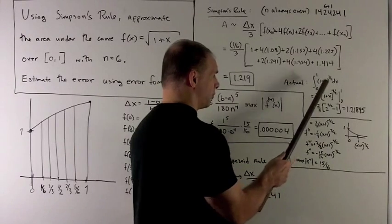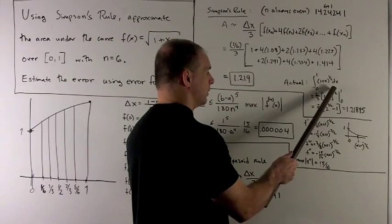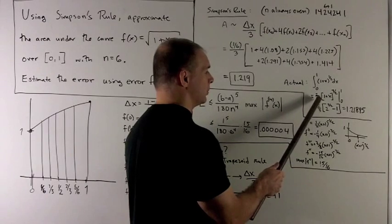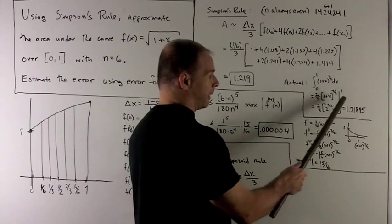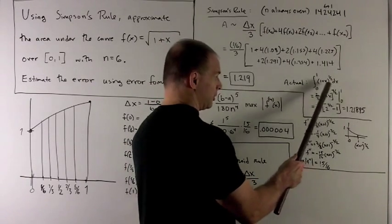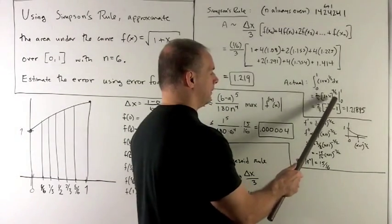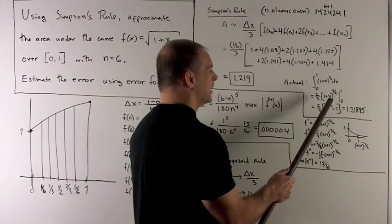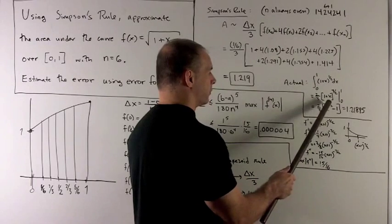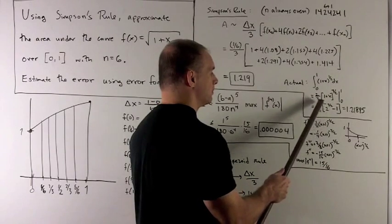So, antiderivative of this is add 1, gives me 3 halves, flip it over, gives me 2 thirds. Of course, you have to worry about integration by substitution here, but we'll be fine, so I don't worry about it. That's going to give me 2 to the 3 halves minus 1 times 2 thirds.